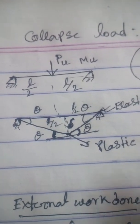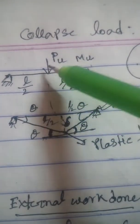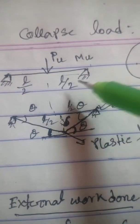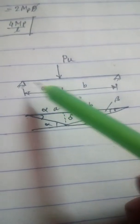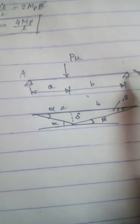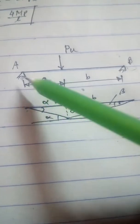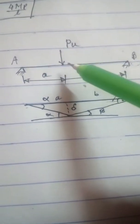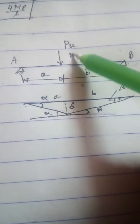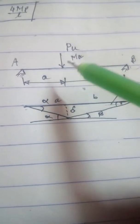In this case, the load will not act at the midpoint of the beam. The problem is: suppose a simply supported beam having a point load acting at a distance 'a' from support A and distance 'b' from support B, and the beam has moment capacity Mu.